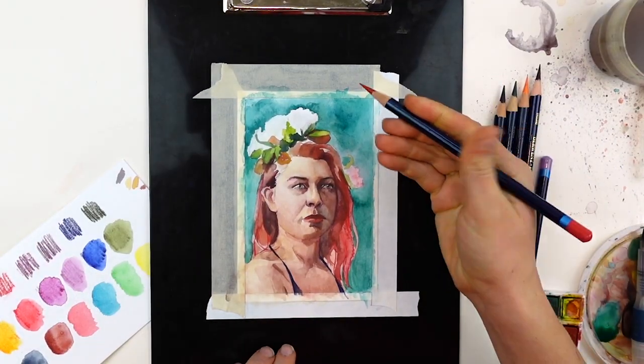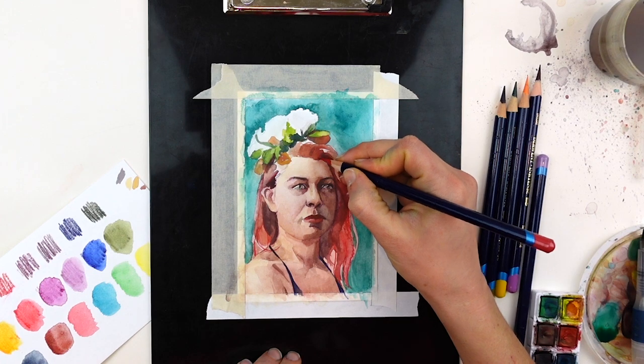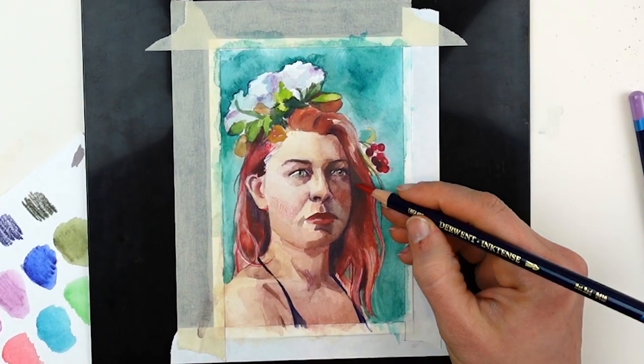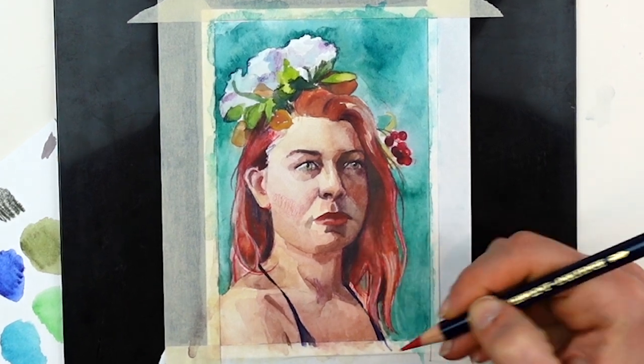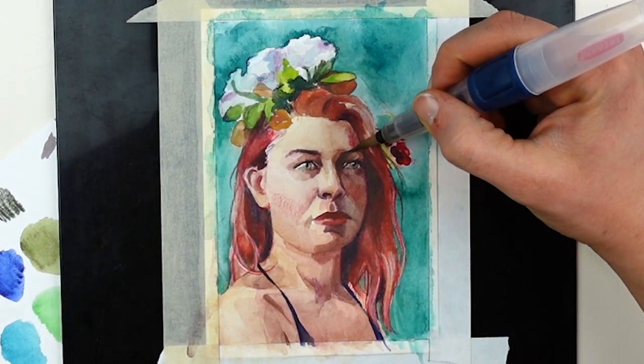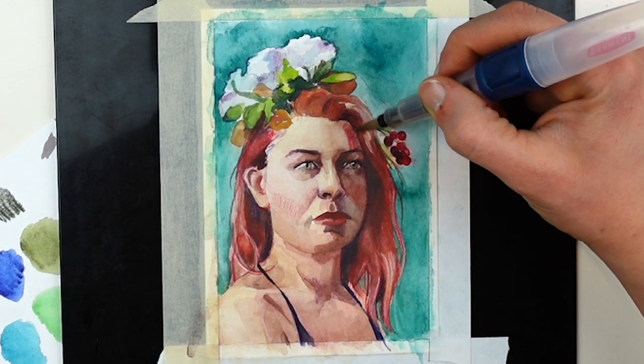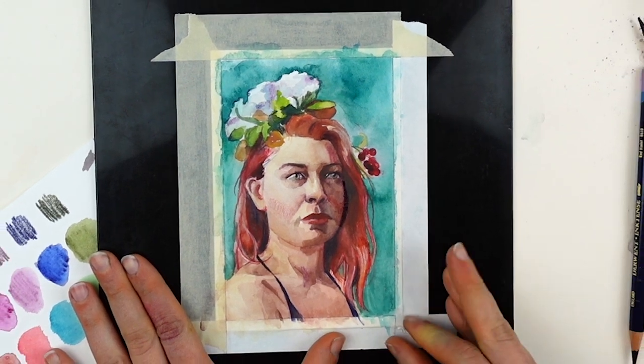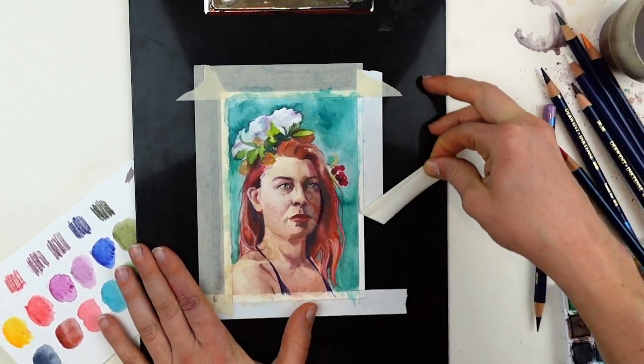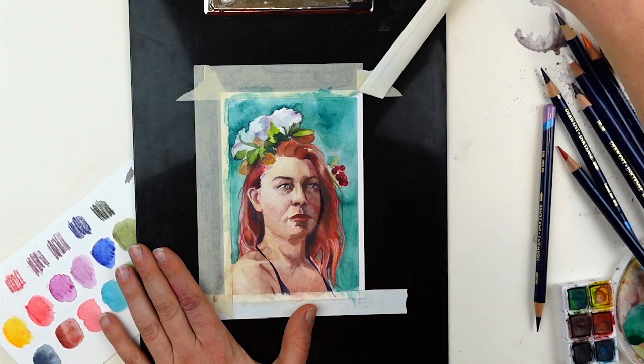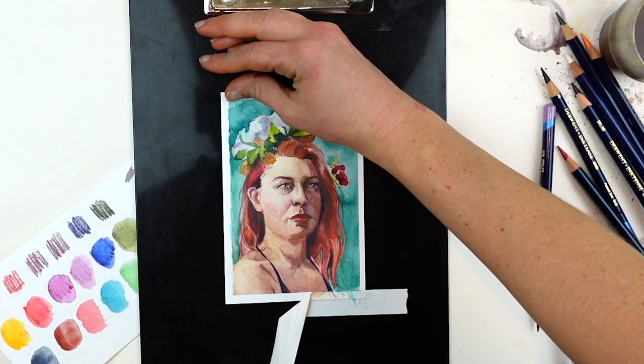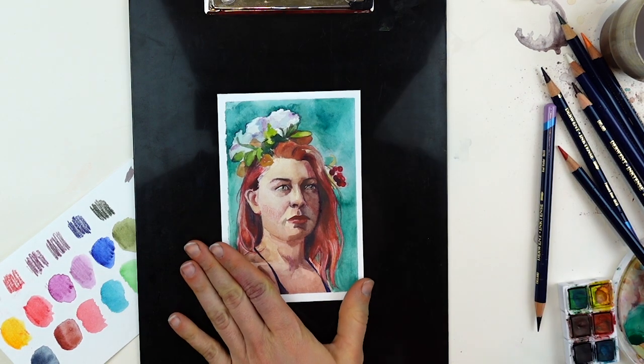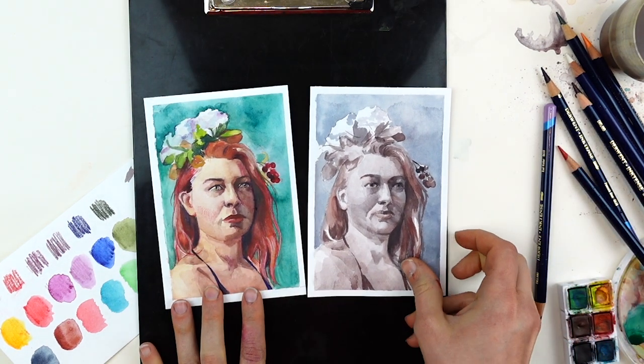So I've jumped forward way further into the process because I'm consolidating probably a three hour drawing down into a minute or two. But you can see here the way that I use the Inktense pencils and the paint pans for some of those final details. Okay, I think it's done. There's the full spectrum of color. A little value study next to it.